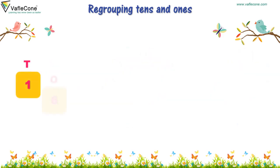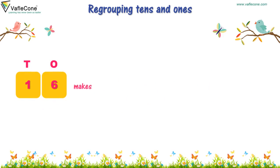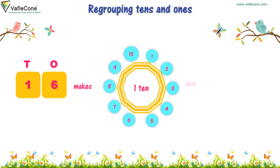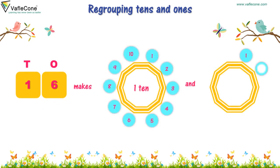One, six — sixteen makes one ten and one, two, three, four, five, six. Six, one.